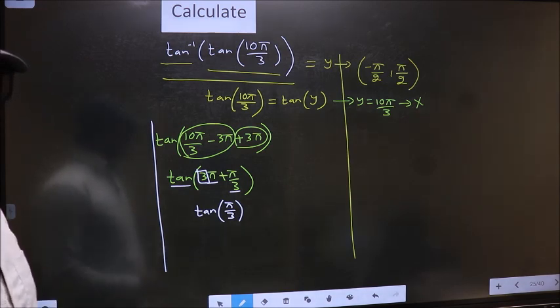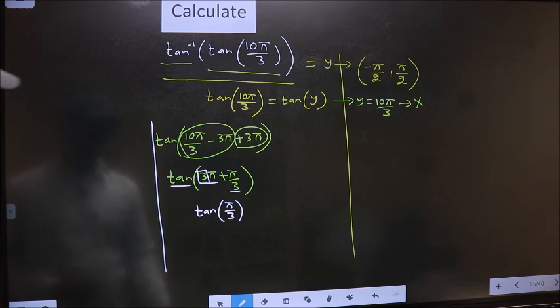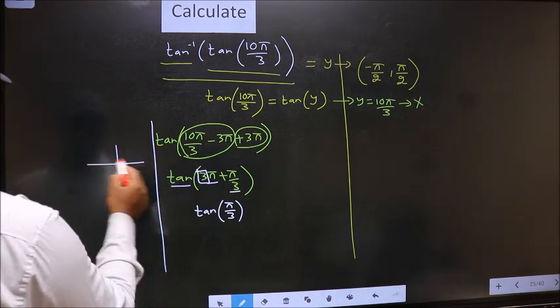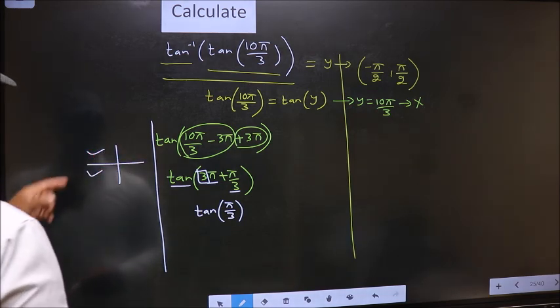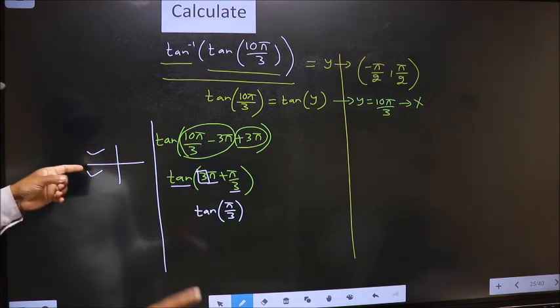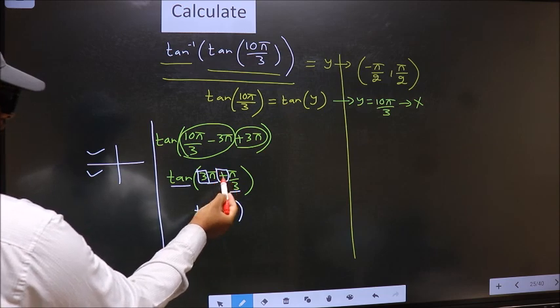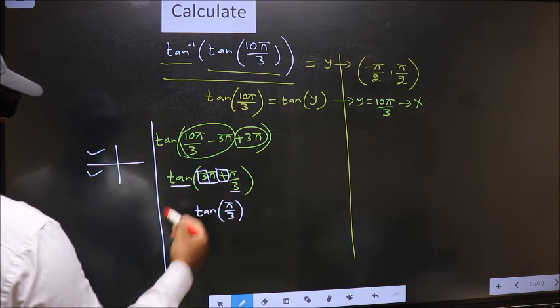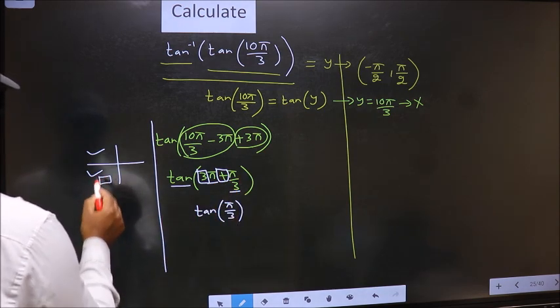And all the odd multiples of π lie either in the second or in the third quadrant. So now to select the quadrant, we should look at this symbol. Here we have plus, that means the angle lies in the third quadrant.